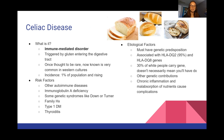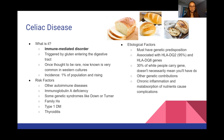Let's talk about celiac disease. It's an immune-mediated disorder triggered by gluten entering the digestive tract. It was once thought to be very rare, but it is way more common now, especially in Western cultures — believed to be in about 1% of the population, and that number is rising. It is an autoimmune disease, so risk factors include having other autoimmune diseases, immunoglobulin A deficiency, genetic syndromes like Down syndrome or Turner syndrome, family history, type 1 diabetes, and thyroiditis.